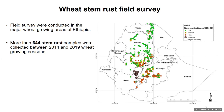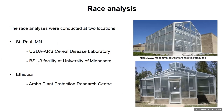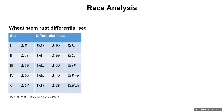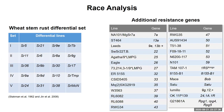Moving on to the methodology: national field surveys were conducted in the major wheat-growing areas of Ethiopia. This map shows the survey areas from 2014 to 2015, with disease incidence indicated. More than 644 stem rust samples were collected between 2014 and the 2019 wheat-growing season. Race analysis was conducted at two locations: St. Paul, Minnesota at the Cereal Disease Laboratory and BSL3 facility at the University of Minnesota, and in Ethiopia at Ambo Plant Protection Research Center.